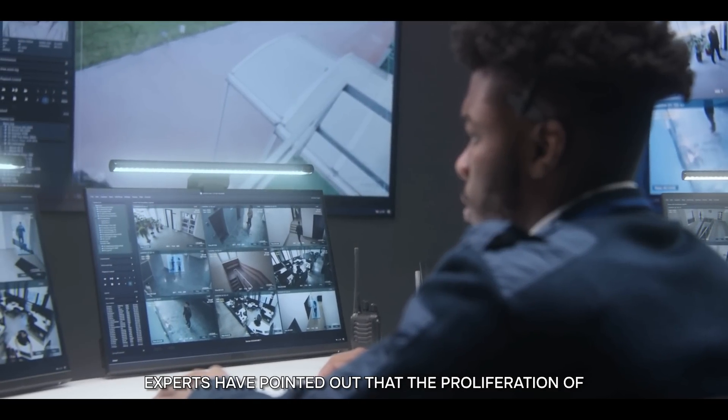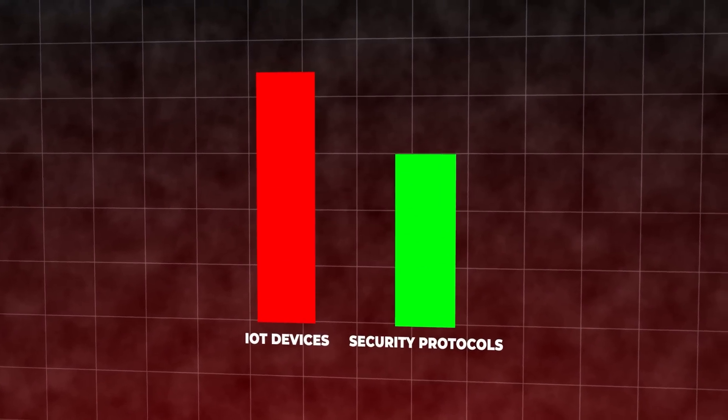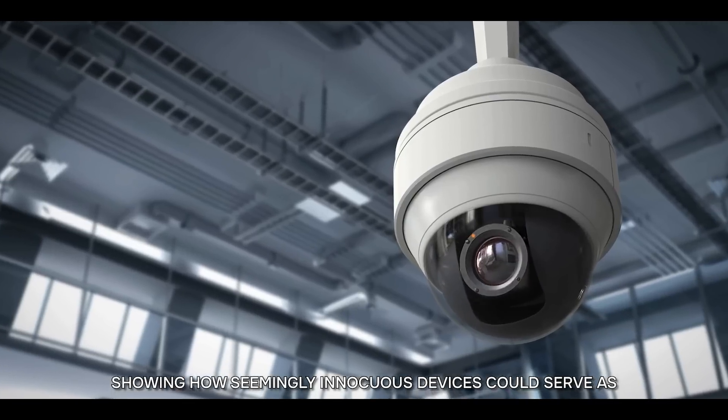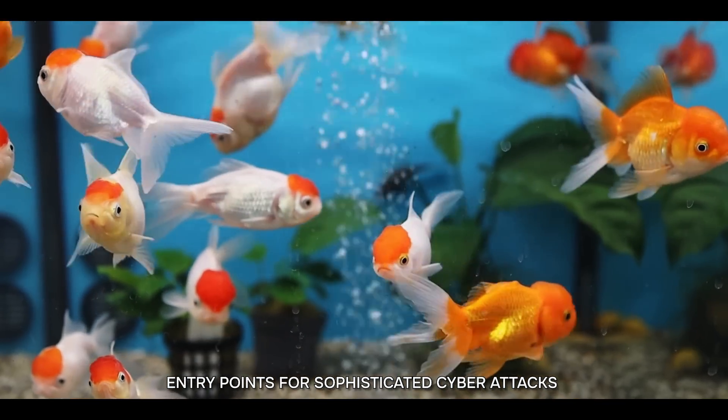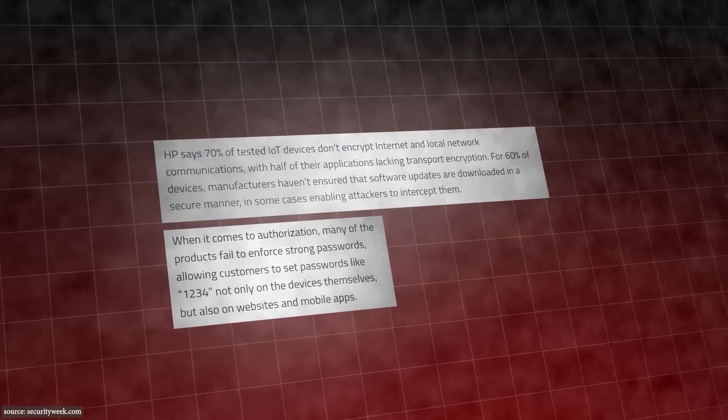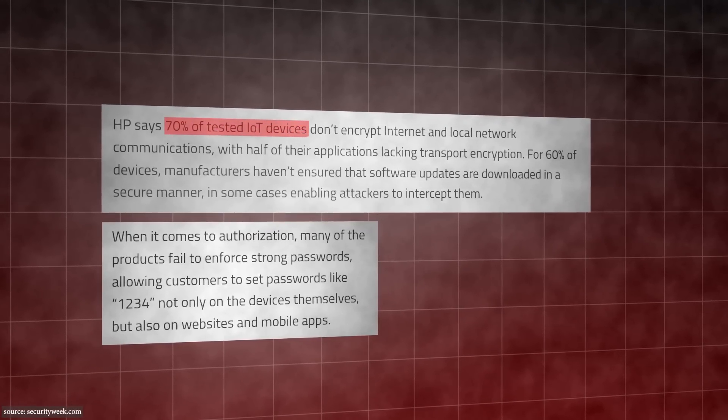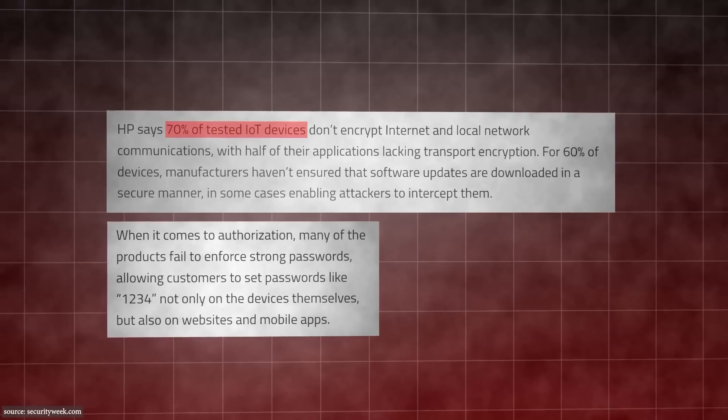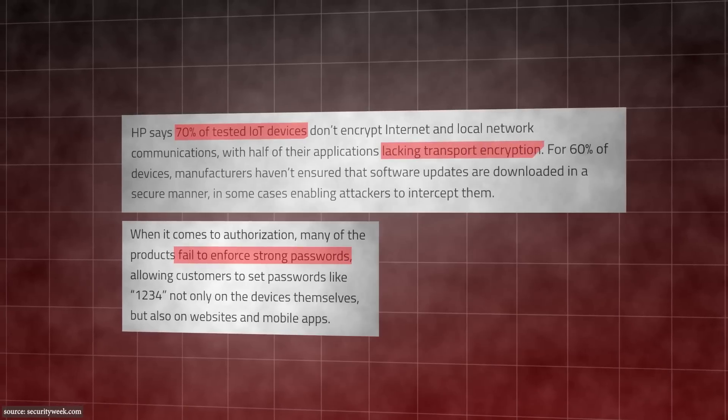Experts have pointed out that the proliferation of IoT devices has outpaced the development of their security protocols. This breach illuminated the risks, showing how seemingly innocuous devices could serve as entry points for sophisticated cyberattacks. Research following the breach revealed startling vulnerabilities. A staggering 70% of commonly used IoT devices contain significant security flaws, ranging from inadequate password protection to unencrypted data transmissions.